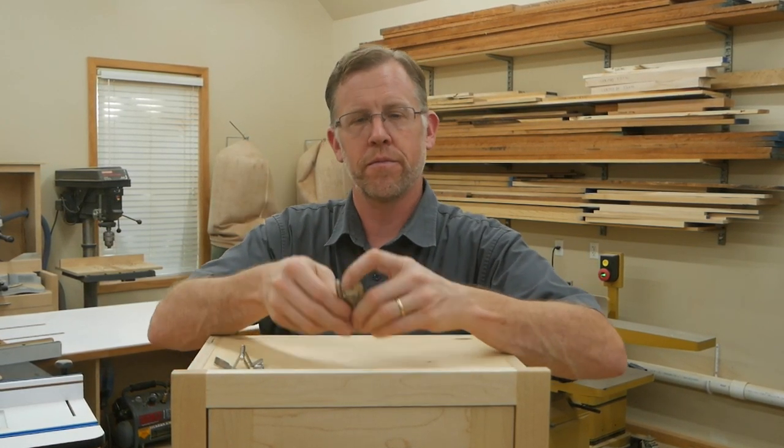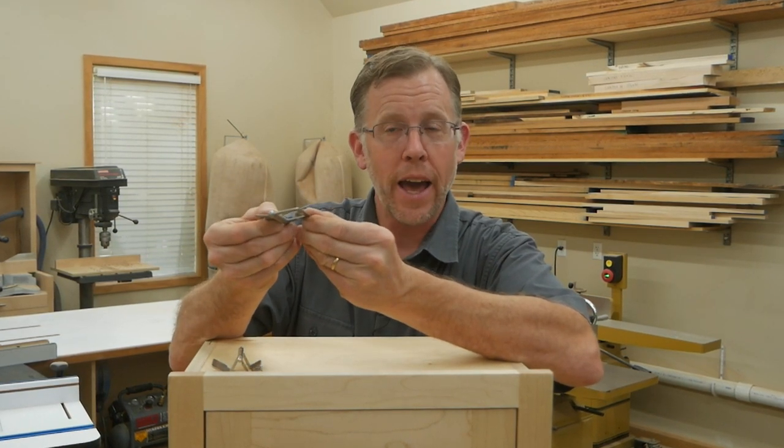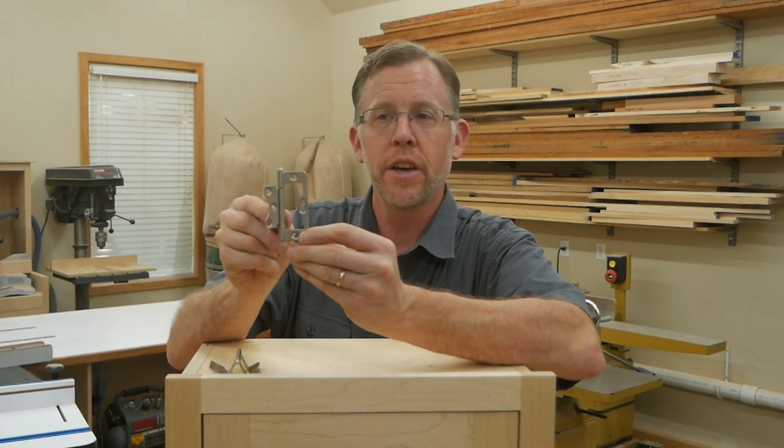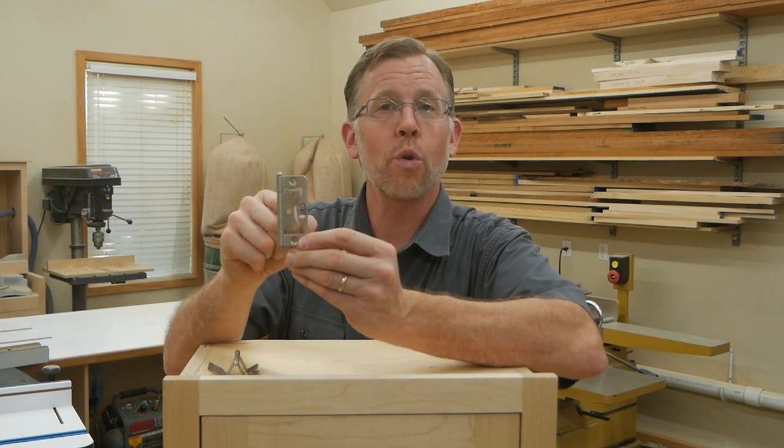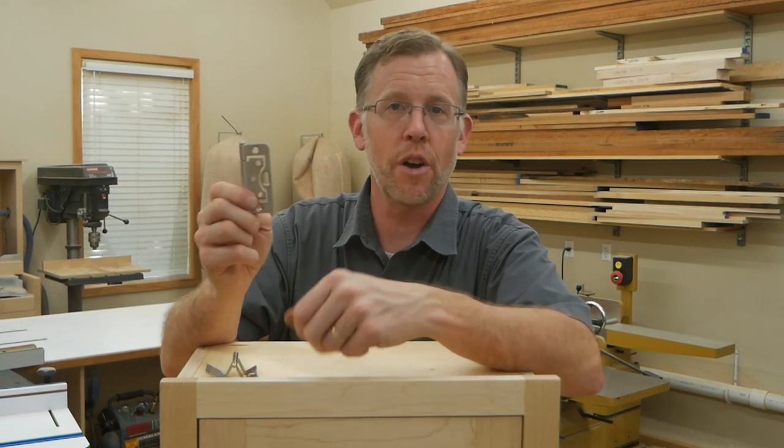With this style, the hinge leaves are flat and the smaller door side hinge leaf nests inside of the larger face frame or cabinet side hinge leaf. But the installation process is largely the same.